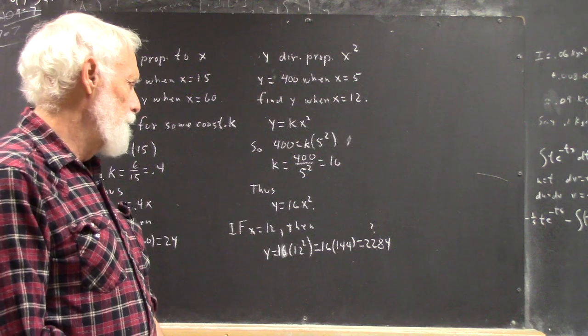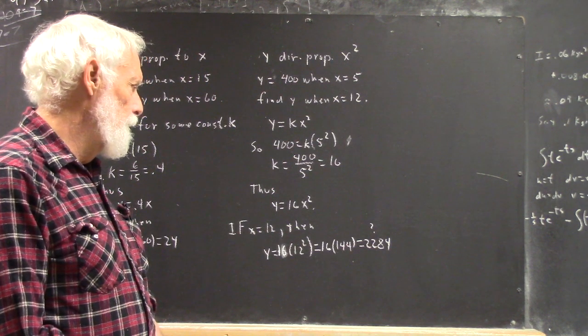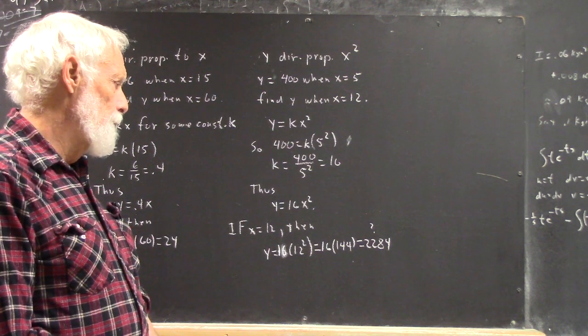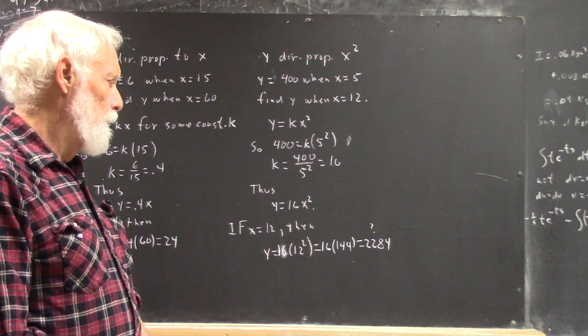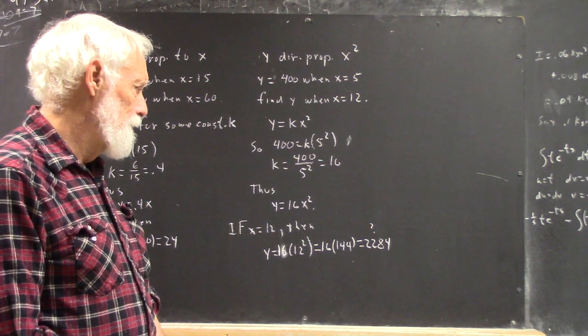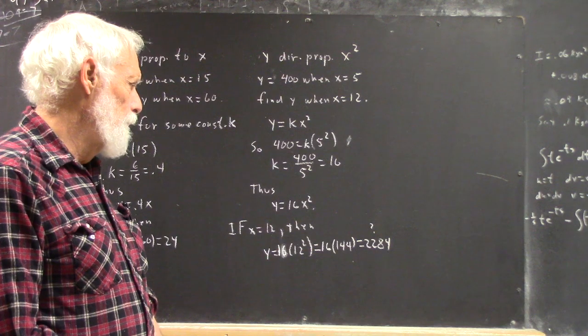But what could I possibly have done wrong? 1600 and 640 is 2240. And 64 is 2284. 2400 minus 6 times 16. That's 96. And I get 2304.